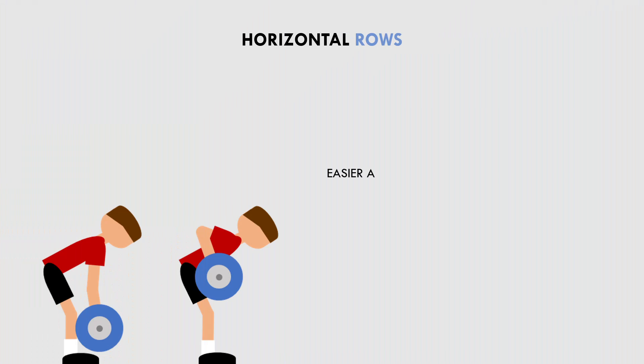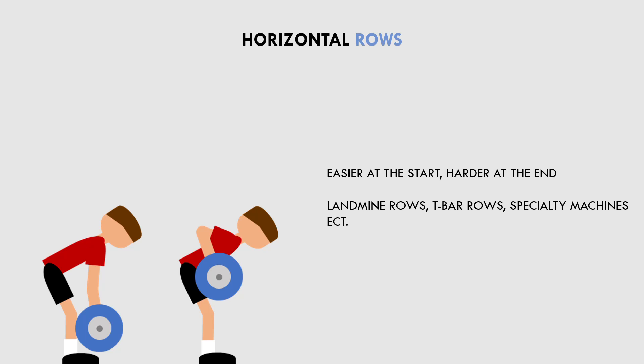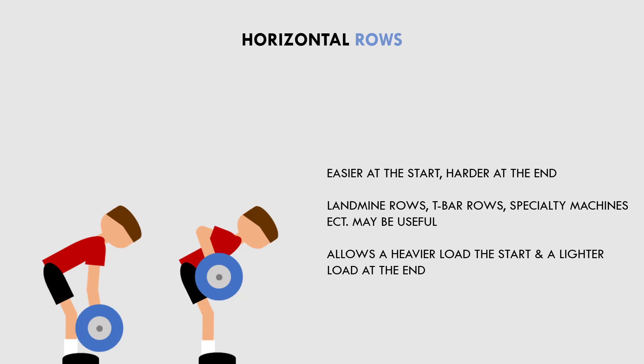Here are two common examples. The first is horizontal rows, which have a descending tension curve — easier at the start and harder as the weight is brought closer to the body. This means that with a heavy load we can't achieve a full range of motion, and with a light load the lift is only challenging at the end range. Therefore, an exercise like a landmine row or t-bar row may be useful, as the weight is heavier at the start and easier as it's brought towards the body, allowing the start range to be loaded heavier. Some manufacturers also make machines specifically designed to match the tension curves of pulling exercises.